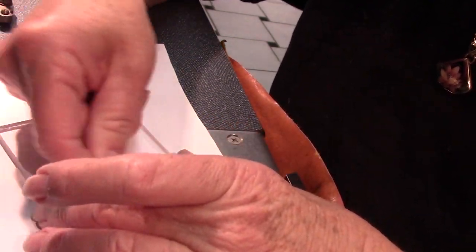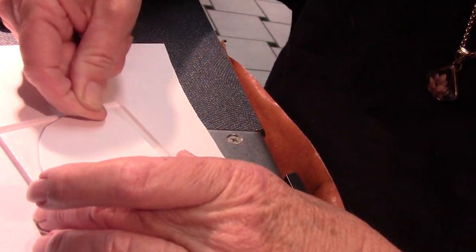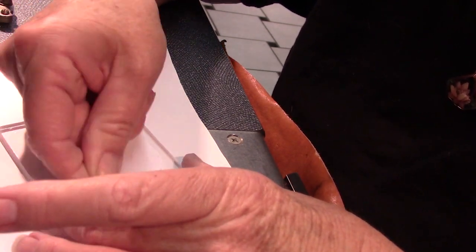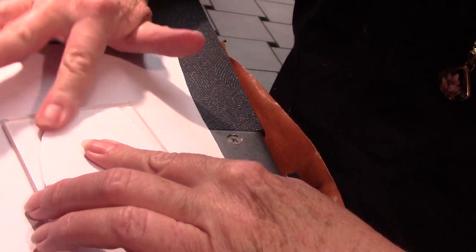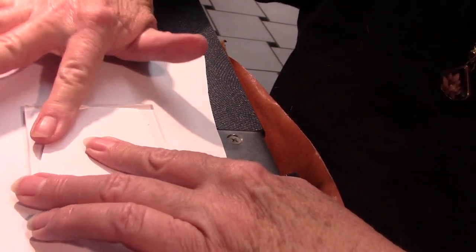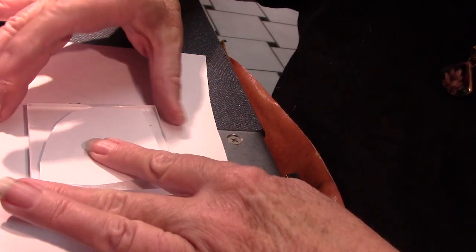And really rub that on so that I make sure and have a good contact. And then you can remove the excess rubber cement from the outside of the piece.